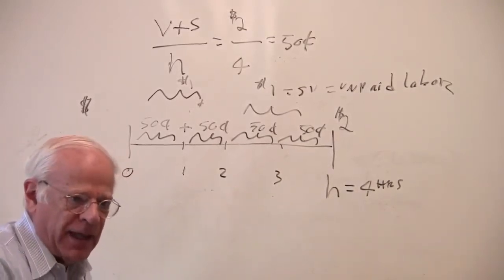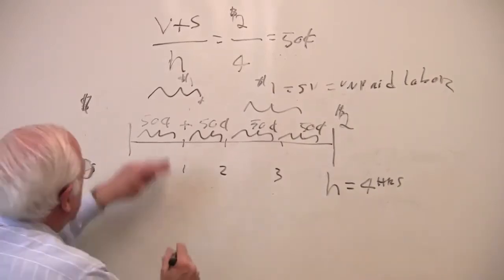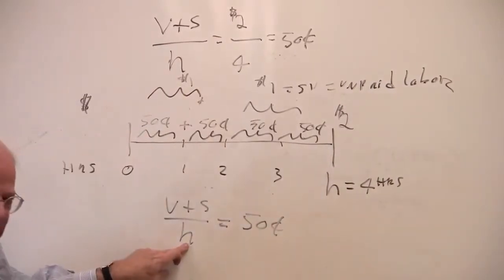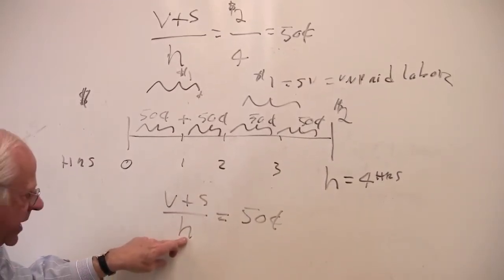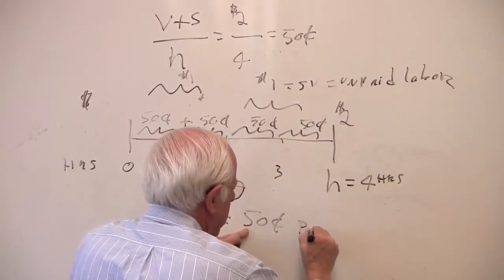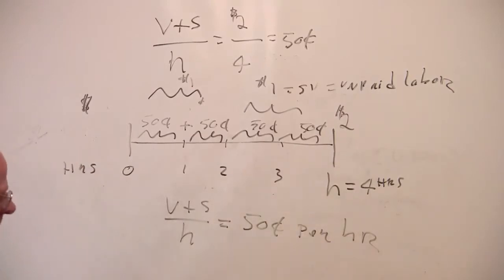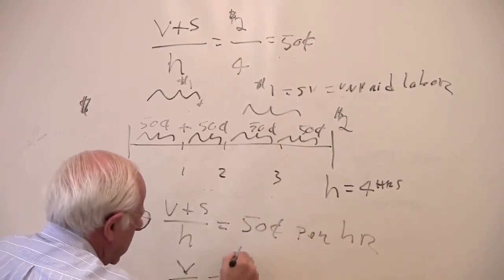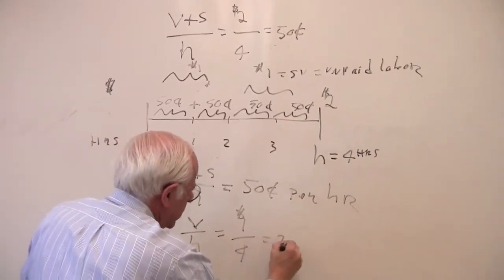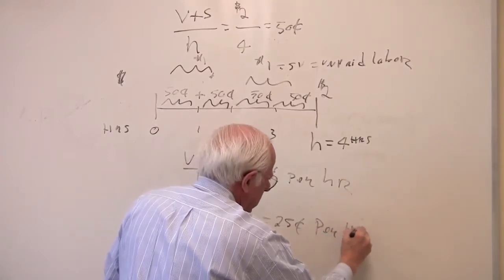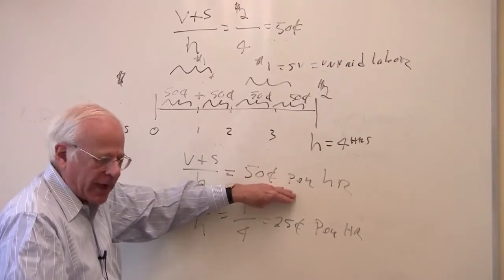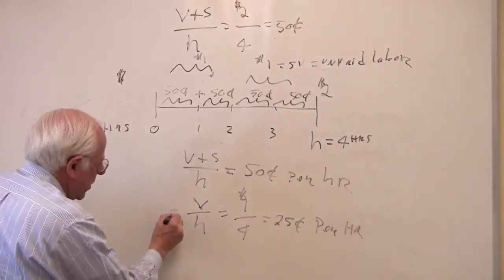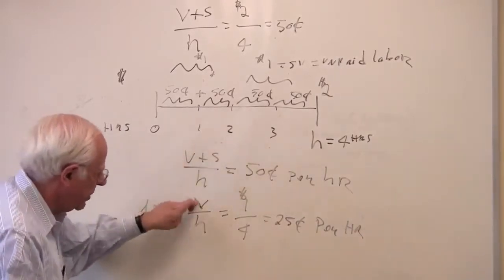On a per-labor-hour basis: the worker produces 50 cents per hour — that's the use value of labor power divided by the number of hours, yielding half a buck per hour. What does the worker get paid per hour? You take the total wages received divided by the number of hours worked — a dollar divided by four hours — which is 25 cents per hour. Marx calls this little v, the wage per hour.